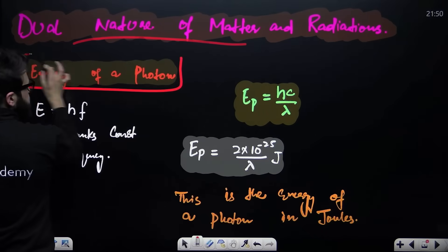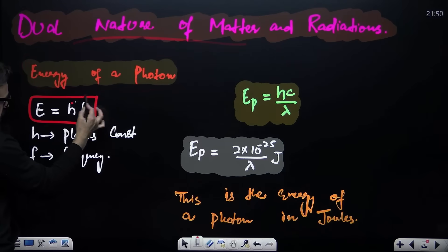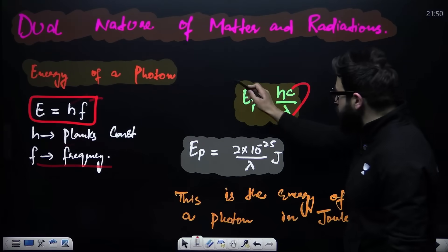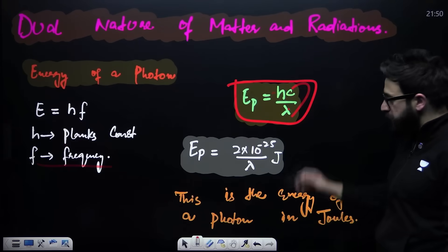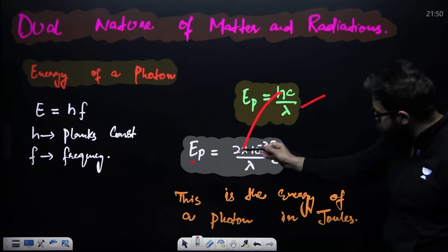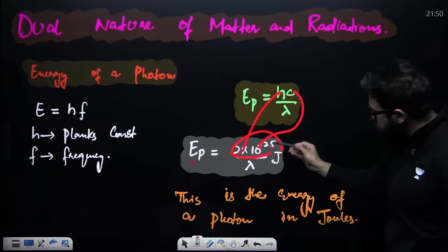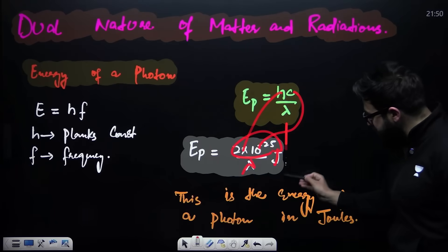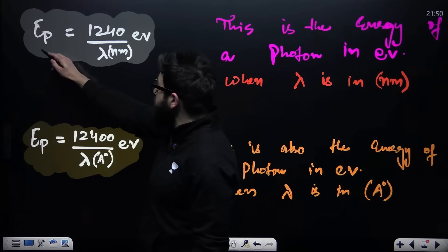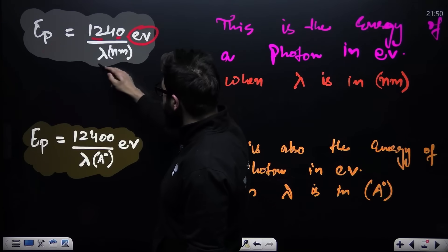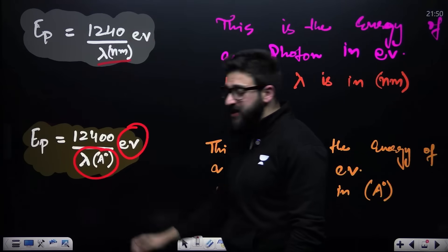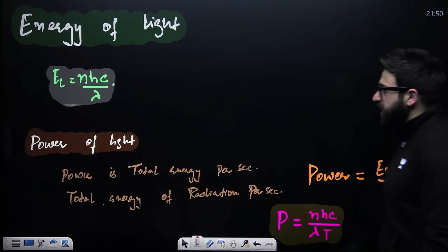The first topic is dual nature of matter and radiation. Energy of a photon is h times f, where h is Planck's constant and f is frequency. We can also write it as hc divided by lambda. Substituting values, energy of a photon in joules is 2×10⁻²⁵ divided by lambda. In electron volts, energy equals 1240 divided by lambda, where lambda is in nanometers.